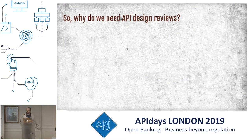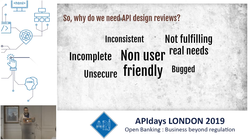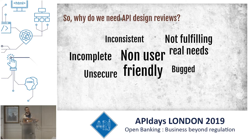This story is a good sample of why we need API reviews. But this is only a sample — what could possibly go wrong when designing APIs? Well, almost everything. APIs can be inconsistent, non-conforming to guidelines, bugged, incomplete, non-user-friendly, unsecure, and may even not fulfill the real needs.